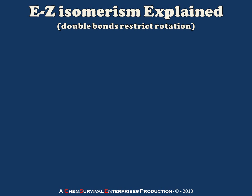Hey everybody, Dr. Davis here to talk to you a little bit about E-Z isomerism. We use this system of nomenclature when we're dealing with alkenes which have certain groups attached to them which create multiple potential geometric arrangements. But before we look at some things that actually have E-Z isomerism, I want to show you a few things that don't.